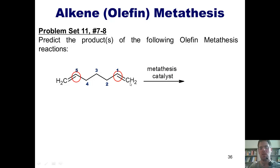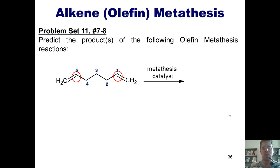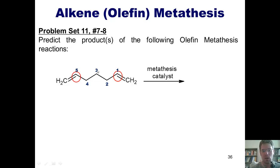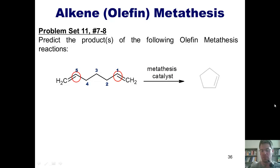I'm not going to worry about numbering the external carbons because I know they are going to depart double bonded to each other as ethylene in the final product. When I take this starting material and treat it with a metathesis catalyst, it's going to form a double bond between carbon-1 and carbon-5. You'll note that this forms a ring, and the total number of atoms in that ring is 5. Thus, it forms cyclopentene: 1, 2, 3, 4, 5.